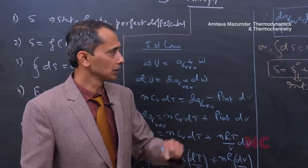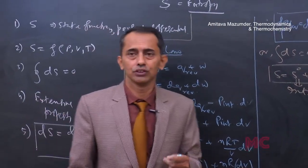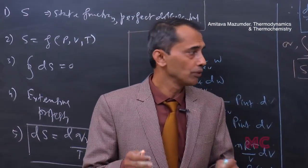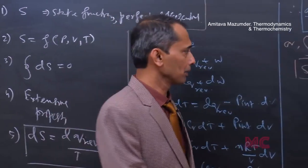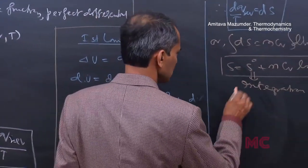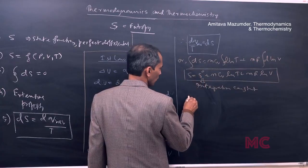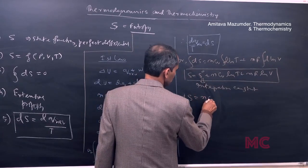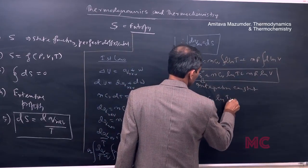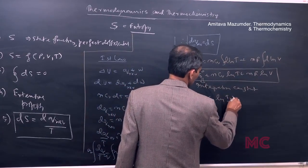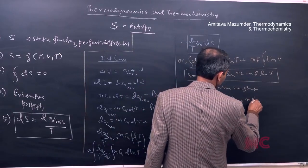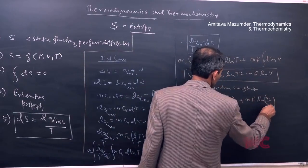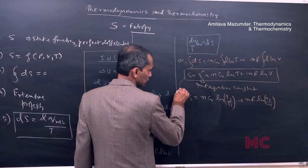If the system changes from state (T₁, V₁) to state (T₂, V₂), since S is a function of P, V, and T, then ΔS equals nCᵥ ln(T₂/T₁) plus nR ln(V₂/V₁).